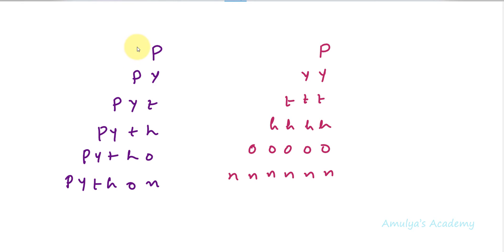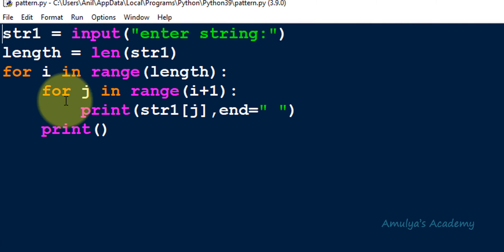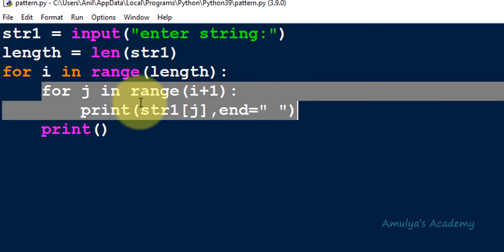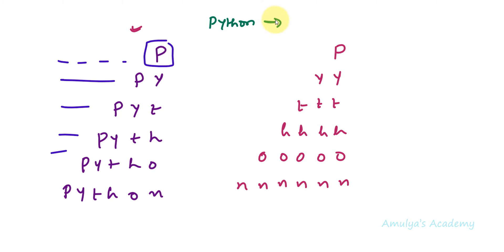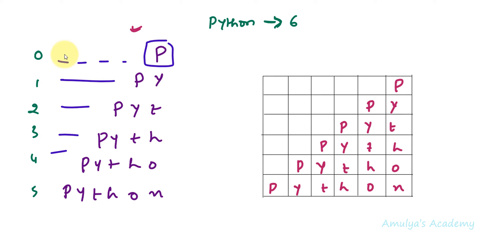The next pattern is a right triangle shape where spaces come before the characters. Before the inner for loop that prints characters, we need an inner for loop to print spaces. The string 'python' has length 6. At row 0 we want 5 spaces, at row 1 we want 4 spaces, at row 2 we want 3 spaces, at row 3 two spaces, at row 4 one space, and at row 5 zero spaces.